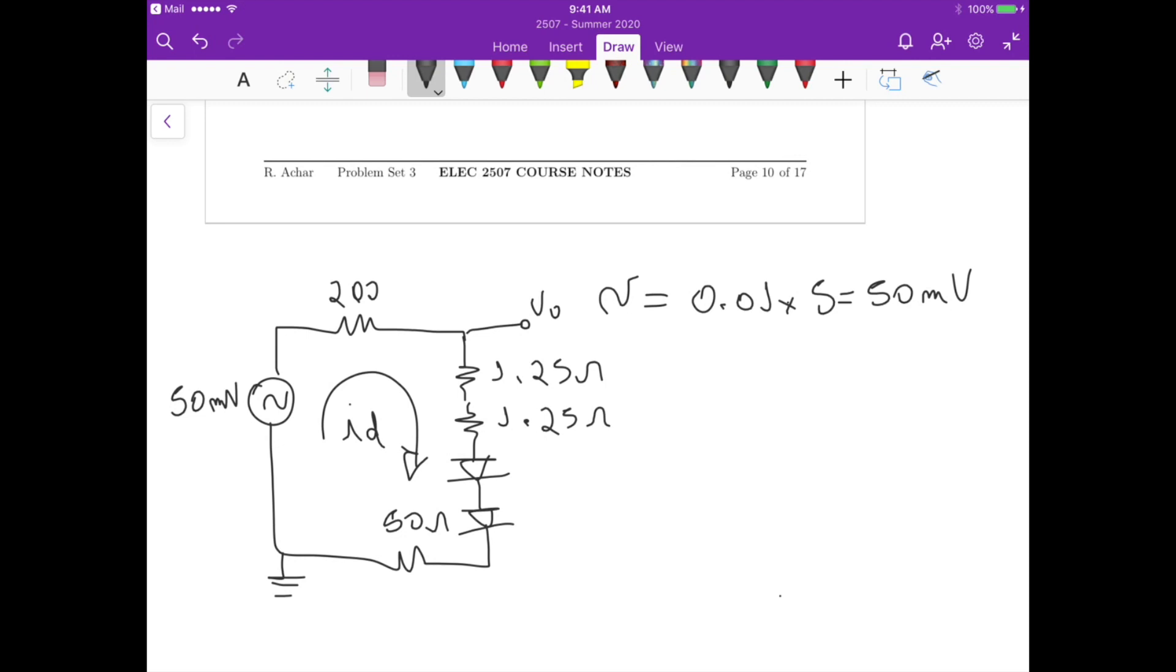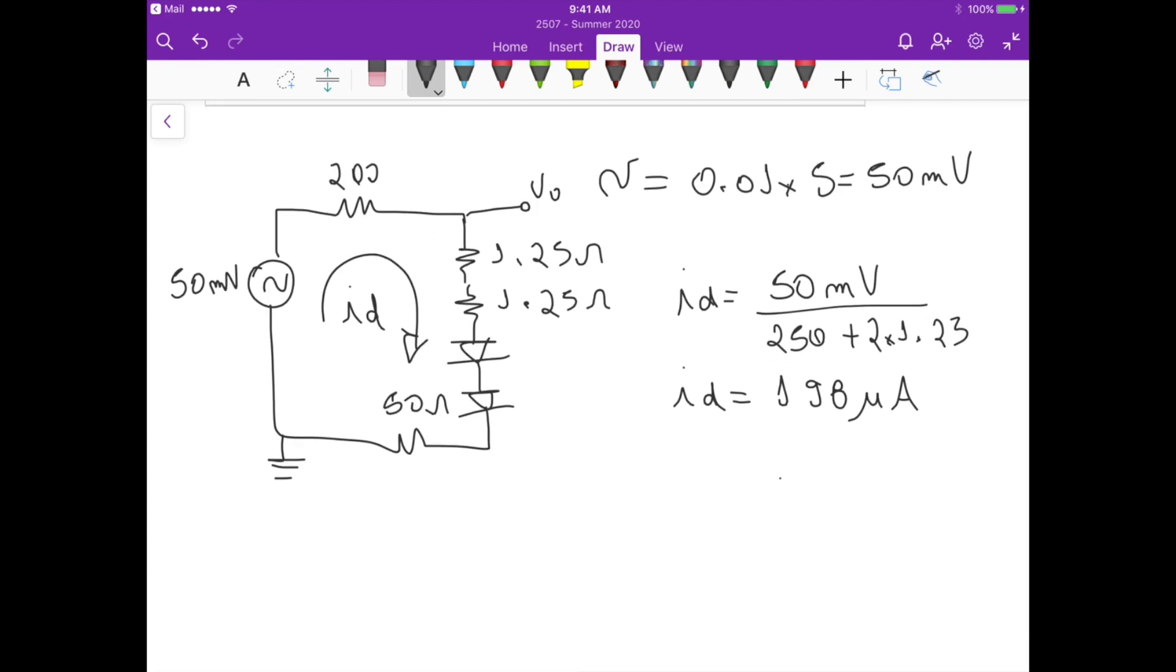So let's calculate that. So it's going to be id equals to 50 millivolts divided by 250 plus 2 times 1.25. And this id is equals to 198 microamperes.